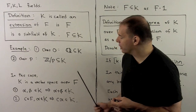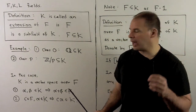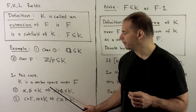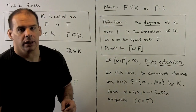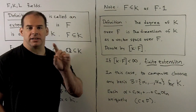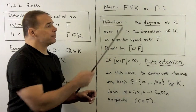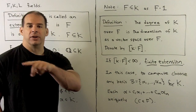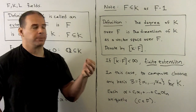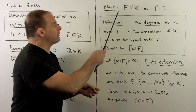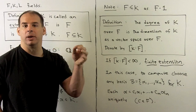We'd have to verify the other axioms for a vector space, but they all hold up here. One thing to note that's not typical for a vector space: in this case, our field of scalars actually lives inside the vector space. So F sits inside K as the span of the element one.